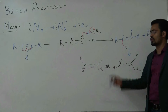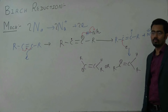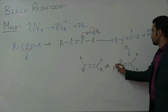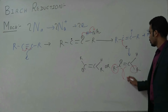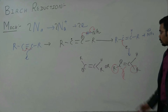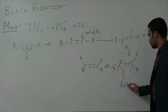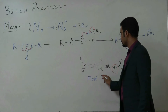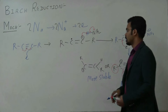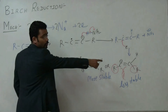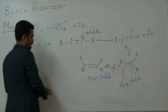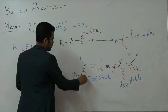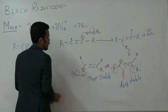Now, which geometry is more stable? This is the trans form and this is the cis form. There is repulsion between the two R groups in the cis form — because of repulsion between R and R, the cis form is less stable. We know that trans is more stable than cis, so the reaction proceeds through the trans intermediate, not the cis one. The trans carbanion has a negative charge and reacts with ammonia (NH3).